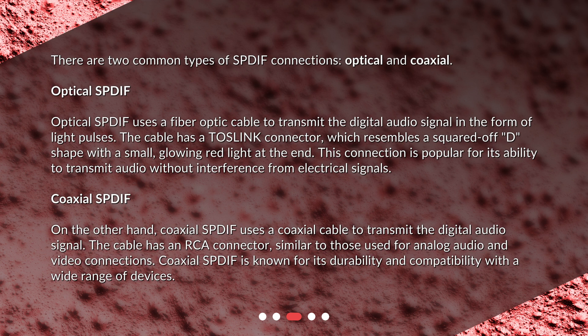Optical SPDIF uses a fiber optic cable to transmit the digital audio signal in the form of light pulses. The cable has a TOSlink connector, which resembles a squared-off D shape with a small glowing red light at the end. This connection is popular for its ability to transmit audio without interference from electrical signals.